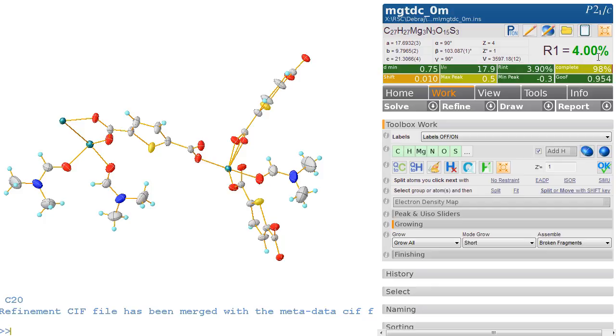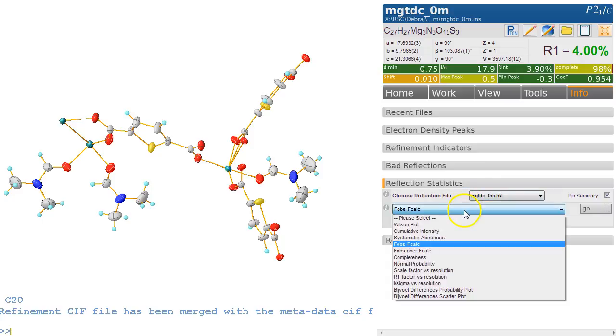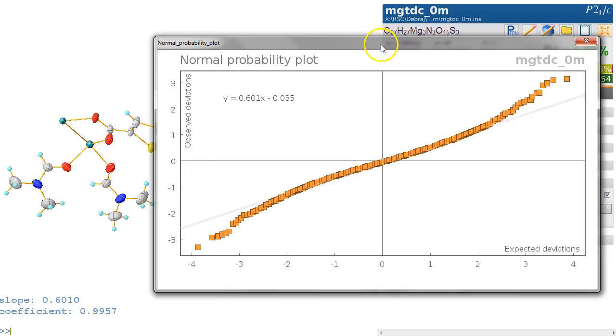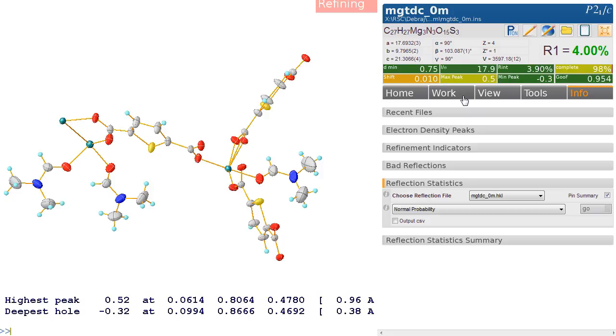Reflection statistics. The other thing to check is possibly the normal probability plot, and that looks very good. Your dataset is okay. So this is a nice structure.